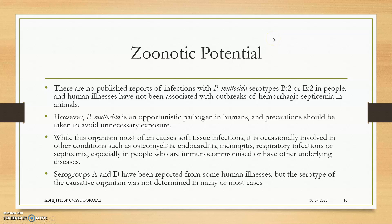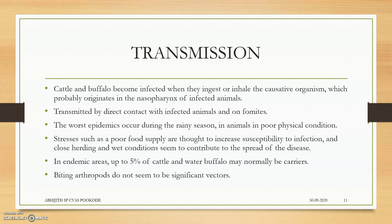Regarding zoonotic potential: there are no published reports of infection of Pasteurella multocida serotypes B2 or E2 — the causative agents of hemorrhagic septicemia in bovines — producing any illness in human beings. However, many Pasteurella bacteria are opportunistic in humans and can cause nasal infections and other infections. Transmission occurs through direct contact with infected animals or fomites, and the worst epidemic transfer occurs during poor physical condition. Whenever stress or transportation of cattle occurs, this disease can transmit — that is why it is also known as shipping fever.